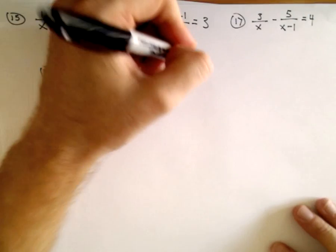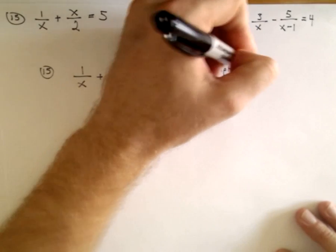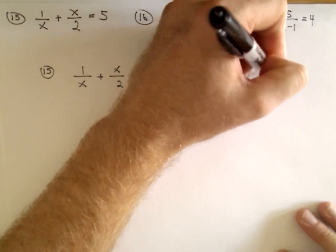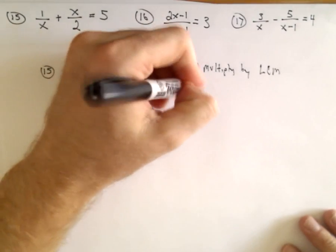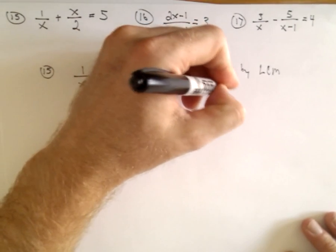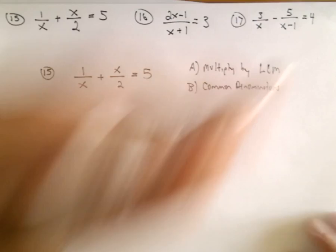1 over x plus x over 2 equals 5. You can either multiply by the least common multiple of the denominators, or you can simply get common denominators and simplify that way.